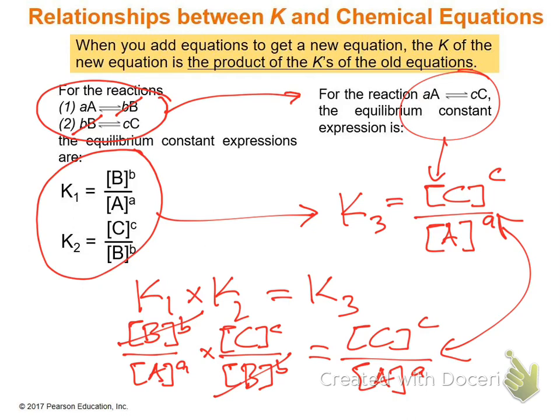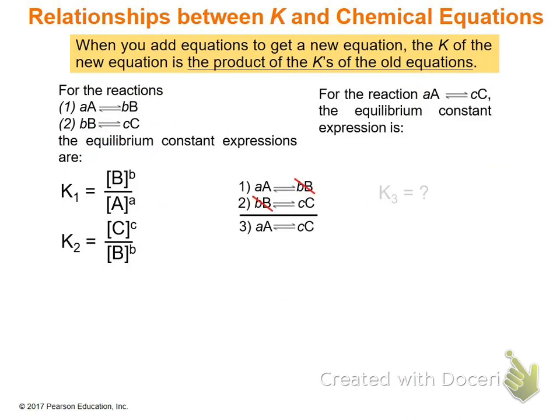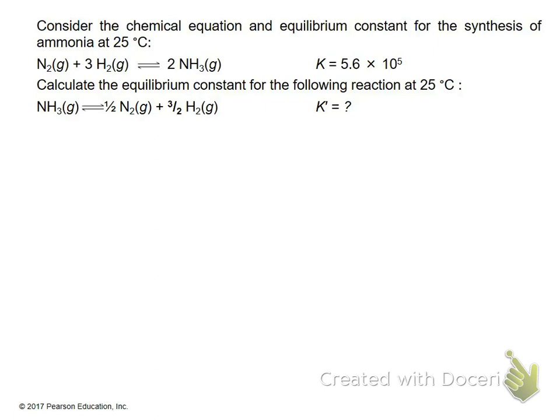Consider the synthesis of ammonia at 25°C: N2 + 3H2 → 2NH3, with a given equilibrium constant of 5.6 × 10^5. Calculate the equilibrium constant for the following reaction at 25°C: ammonia breaking down into nitrogen gas and hydrogen gas — the reverse and halved form of the original equation.